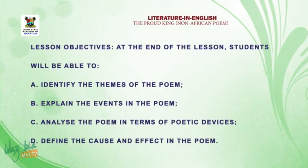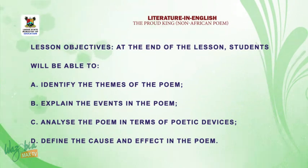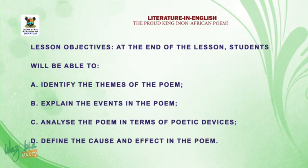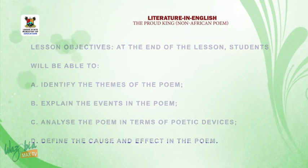Our lesson objectives: at the end of the lesson, students will be able to identify the themes of the poem, explain the events in the poem, analyze the poem in terms of poetic devices, and define the cause and effect in the poem.